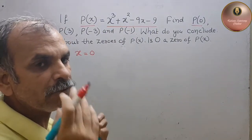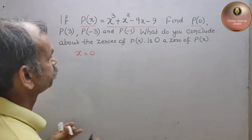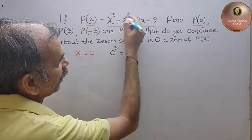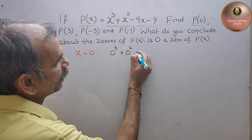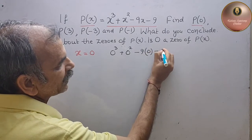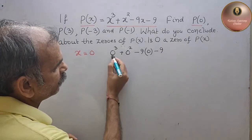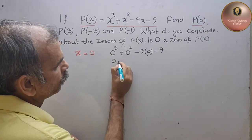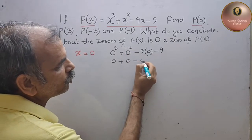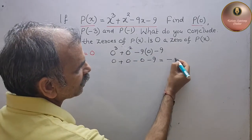For p(0), we will put the value x as 0. So x cube means 0 cube, plus x square means 0 square, minus 9x means 0, minus 9. Now 0 cube is 0, plus 0 square is 0, minus 9 into 0 is 0, minus 9. Therefore your answer is minus 9.